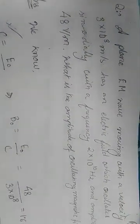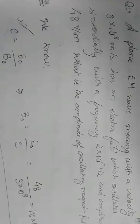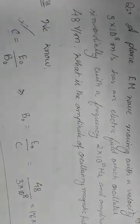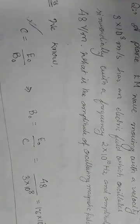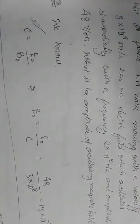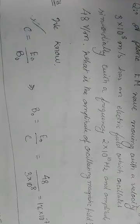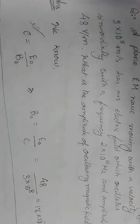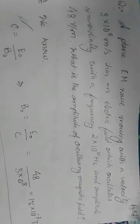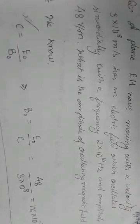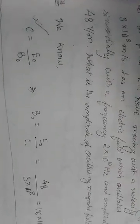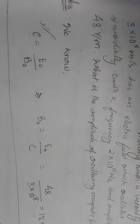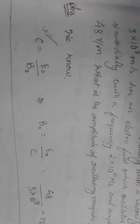A plane electromagnetic wave is moving with velocity 3×10^8 meter per second, has an electric field which oscillates sinusoidally with frequency 2×10^10 hertz and amplitude 48 volt per meter. What is the amplitude of the oscillating magnetic field? The relation is C = E₀/B₀. This is a very important formula.